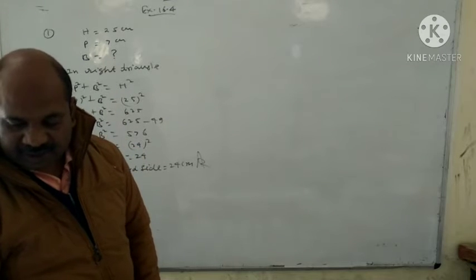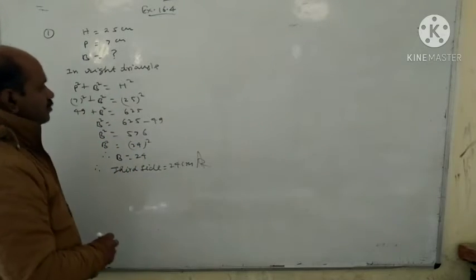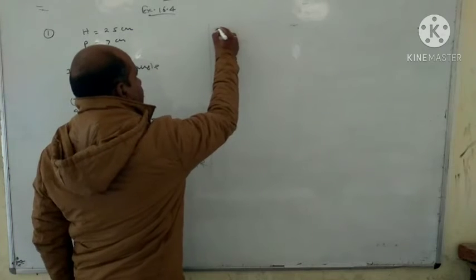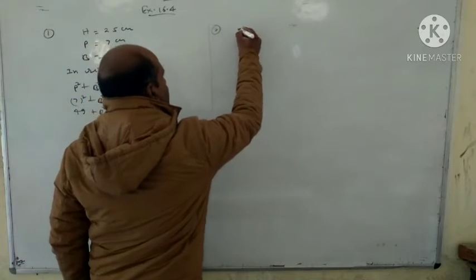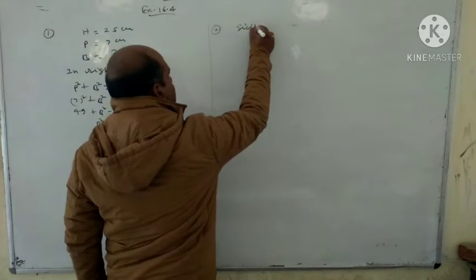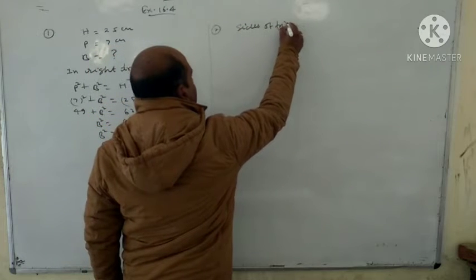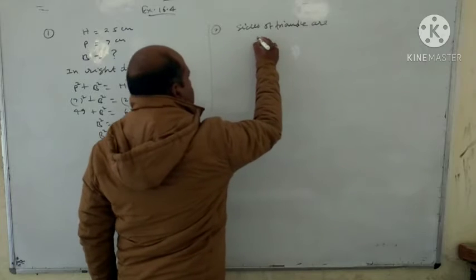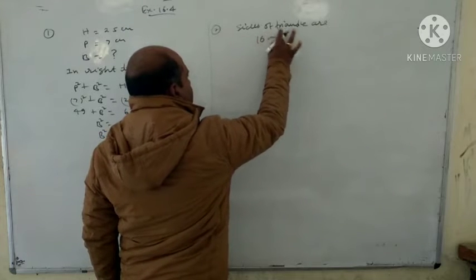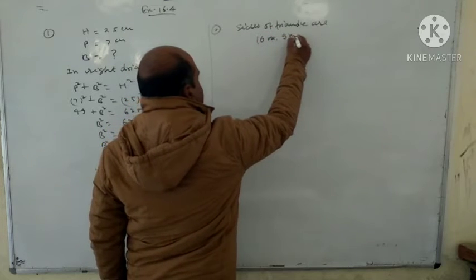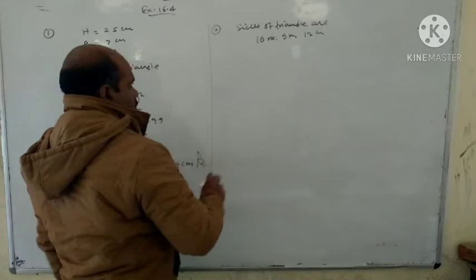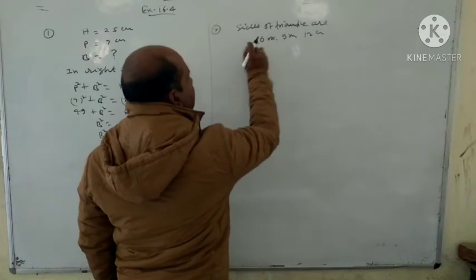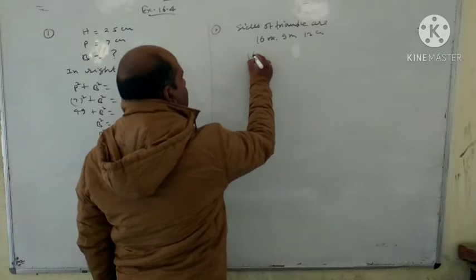The sides of the triangle are 16 cm, 9 m, and 12 m. We check: 9 squared is 81, 12 squared is 144, and 16 squared is 256. Since 81 plus 144 equals 225, and 225 does not equal 256, these are not the sides of a right angle triangle.